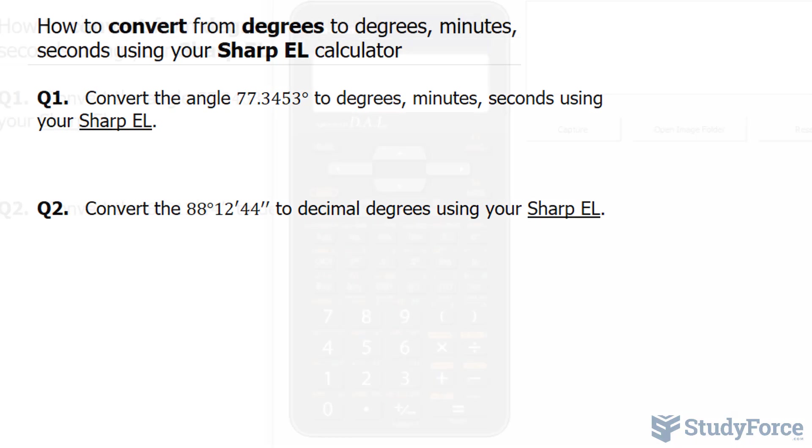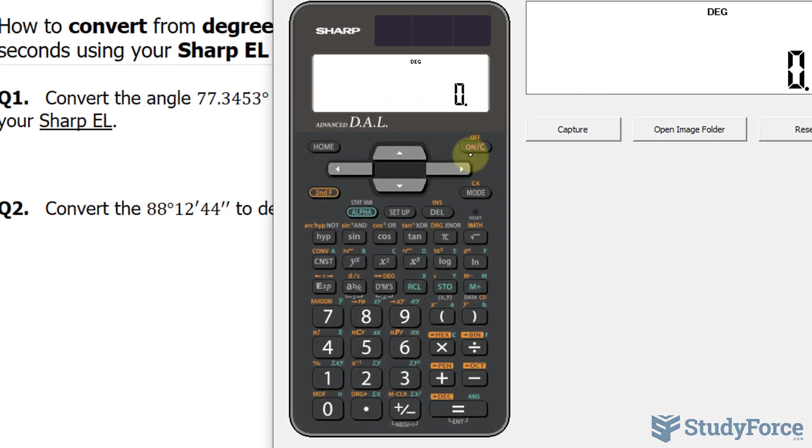Let's go ahead and turn on our calculator. So our angle is 77.3453. Type that in: 77.3453.